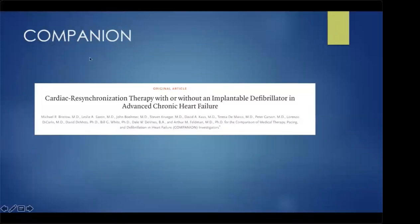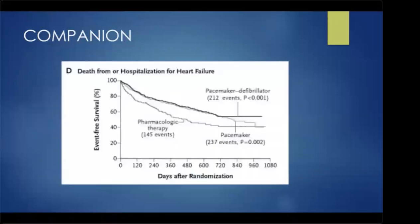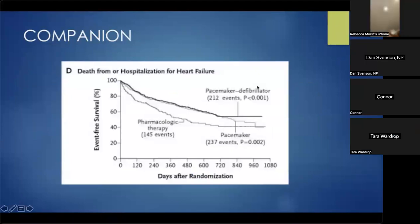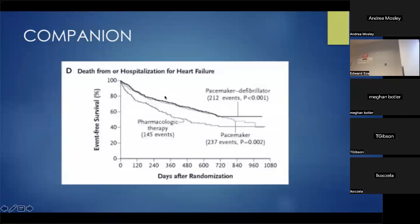In 2003, the COMPANION trial was published in the New England Journal of Medicine. It looked at people with EF of 35% or less, class 3 or ambulatory class 4 heart failure, and randomized them to medicines or a CRT device — either a CRT pacemaker or CRT defibrillator. With CRT, there was a significant reduction in heart failure hospitalization or death.